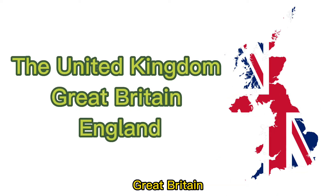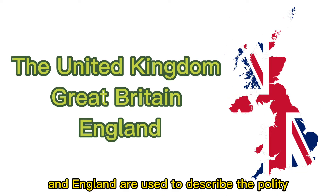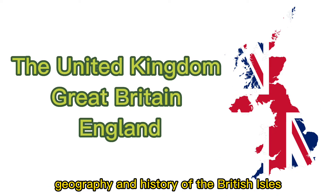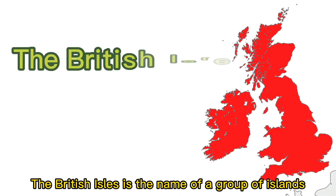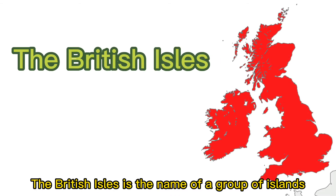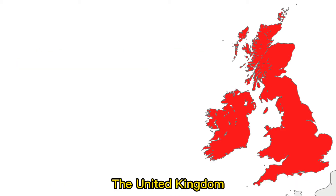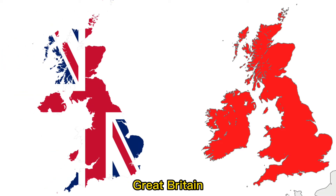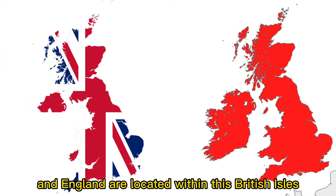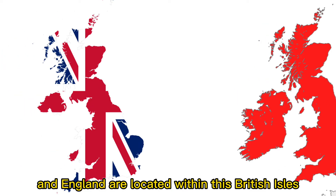The terms United Kingdom, Great Britain and England are used to describe the polity, geography and history of the British Isles. The British Isles is the name of a group of islands situated on the north-western corner of mainland Europe. The United Kingdom, Great Britain and England are located within these British Isles.